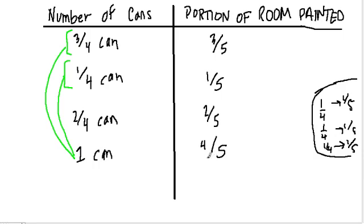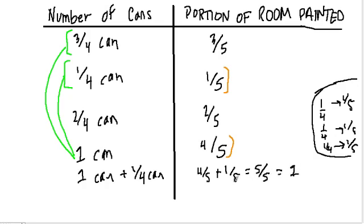Now our goal is to cover an entire room. So 1 can only covers 4 fifths - it doesn't cover enough. We want to know how to cover 5 fifths, or the whole room. What I see is that we have a fifth left - if we have 4 fifths painted, 1 fifth is left. So we need a whole can and a fourth of a can. 1 can and a fourth of a can will cover 4 fifths plus 1 fifth, or 5 fifths. And that is just 1. So how many cans covers the full room? 1 and 1 fourth covers 1 full room.